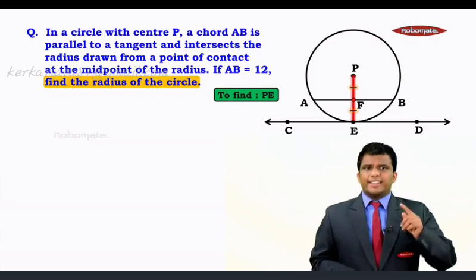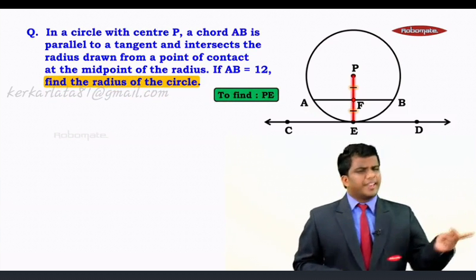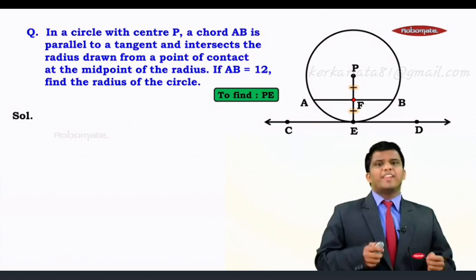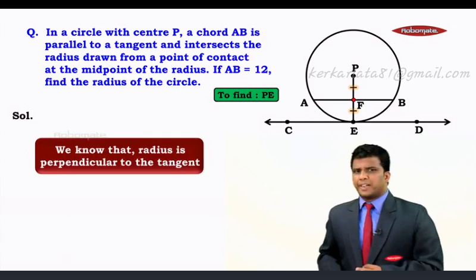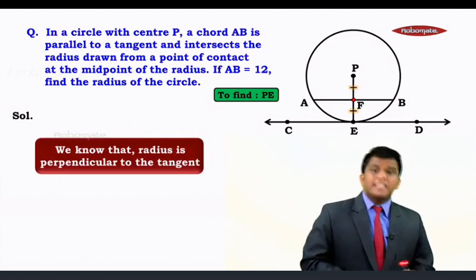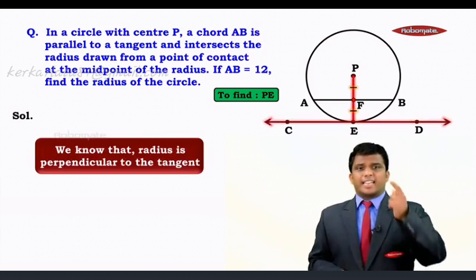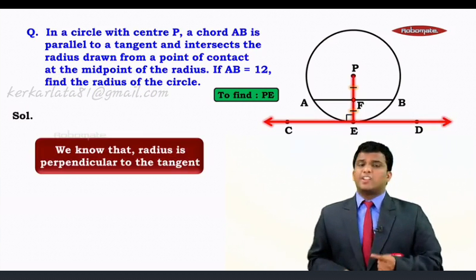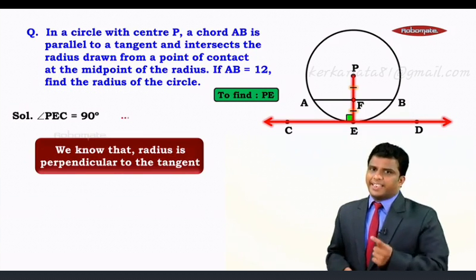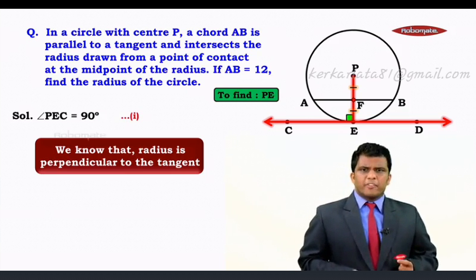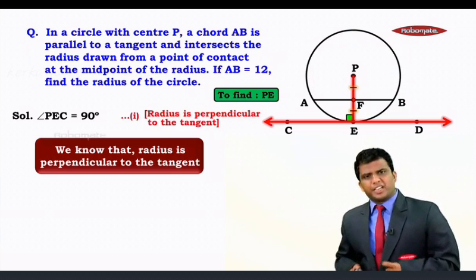Because PE is a radius at the point of contact, we already have a tangent. And we know we have a property which says radius is perpendicular to the tangent. That means children, we can now say that angle PEC will be 90 degrees. Let this be result number 1. And the reason is radius is perpendicular to the tangent.